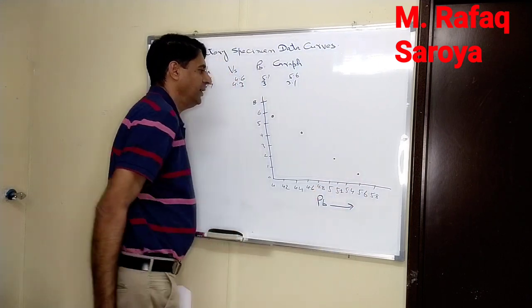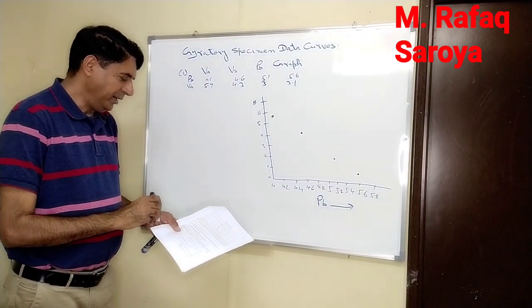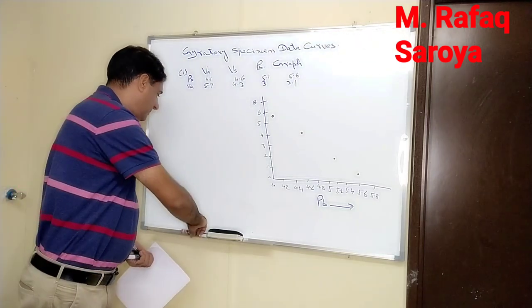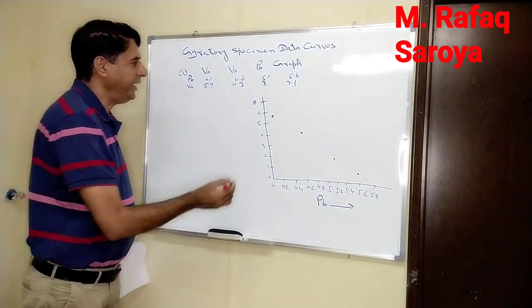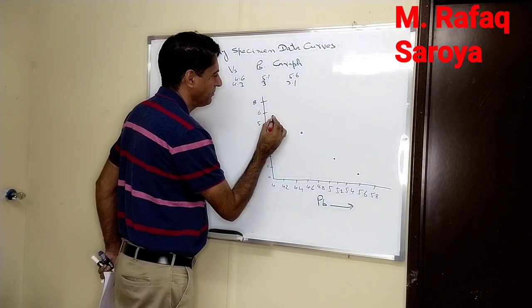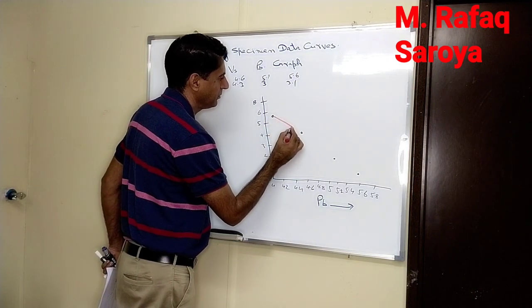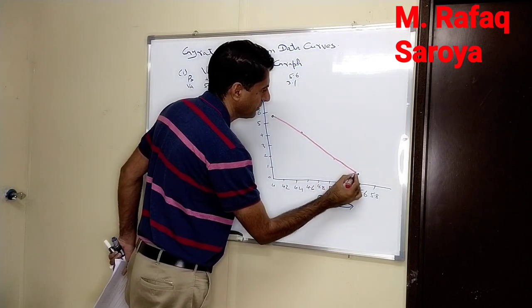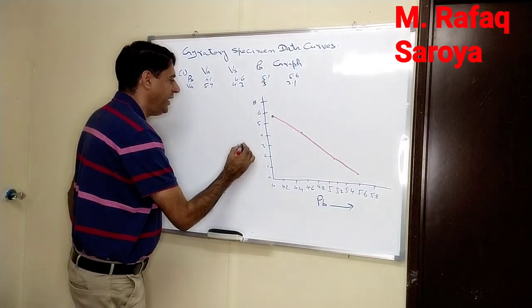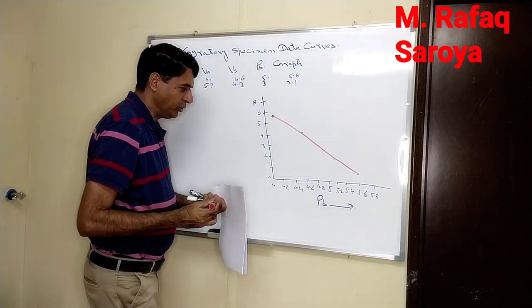From this graph, whatever we have plotted here, when I join them we are going to get this line. This is the graph between air voids and the PB content.